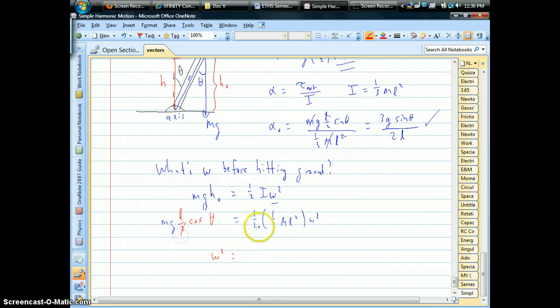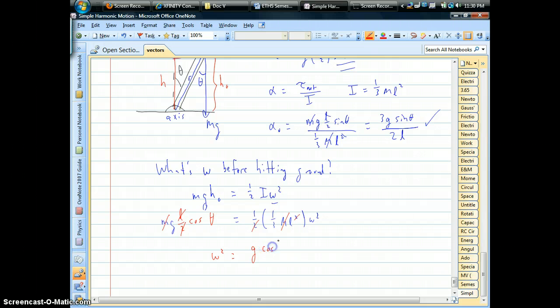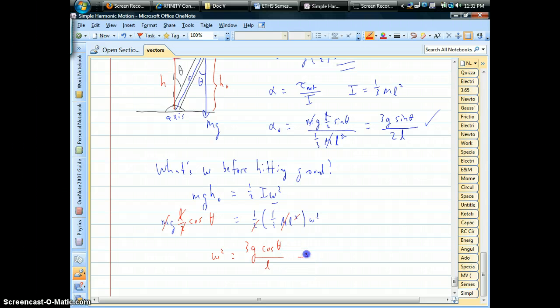Let's see, this factor of half is going to drop out in this case. The mass is going to drop out on the two sides. One of the L's is going to drop out. And so, it's looking like omega squared is, when you're left with the gravitational acceleration, we have the cosine of that initial angle. Okay, at least relative to the vertical line. And we have to multiply by factor 3 and divide by L. And so then we'd have our angular velocity just before it hits the ground.